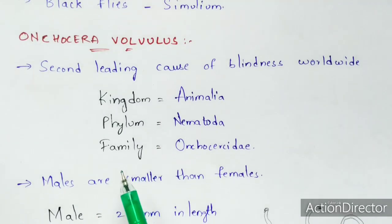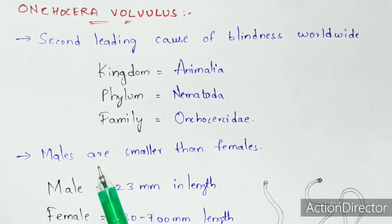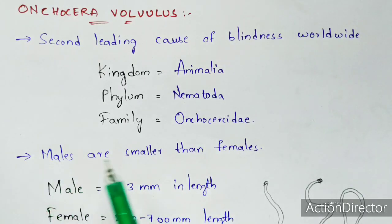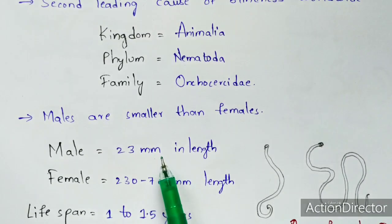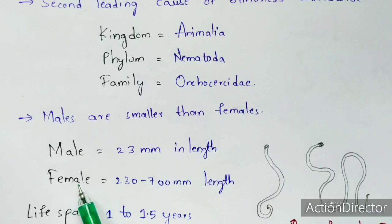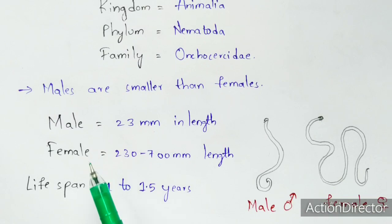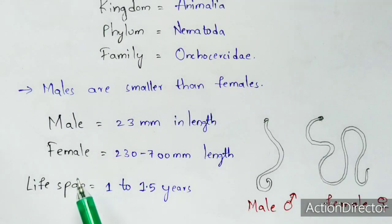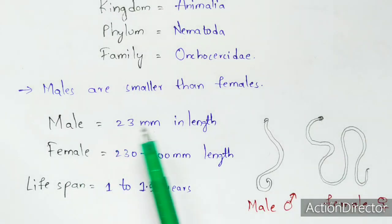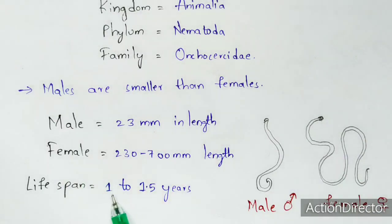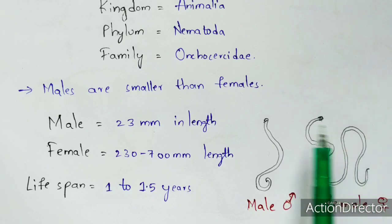This parasite is bisexual, meaning males and females are separate. Males are smaller, ranging up to 23 millimeters in length, while females range from 230 to 700 millimeters. The lifespan of the female is 1 to 1.5 years, while males die immediately after mating.